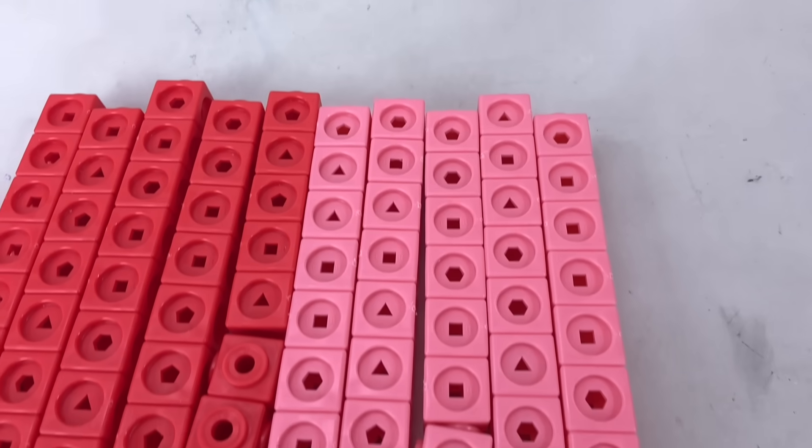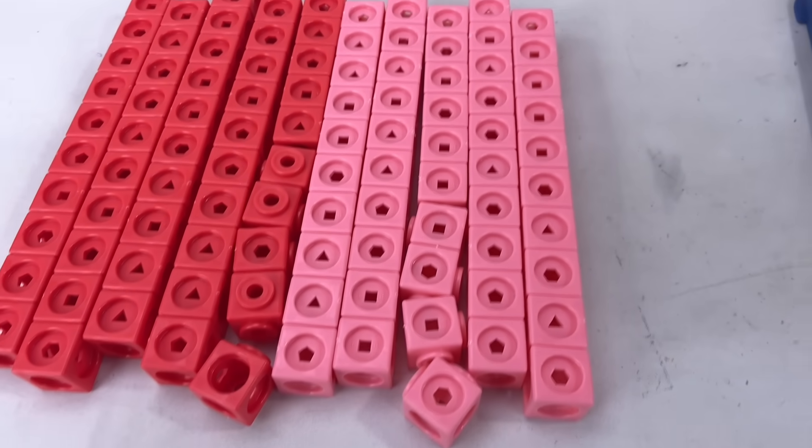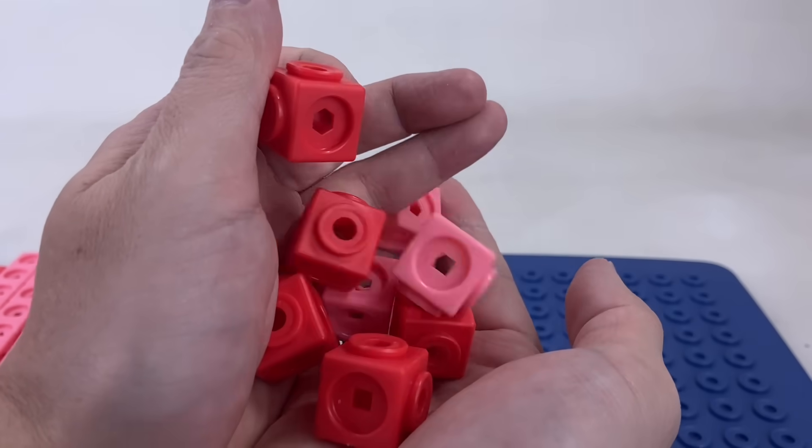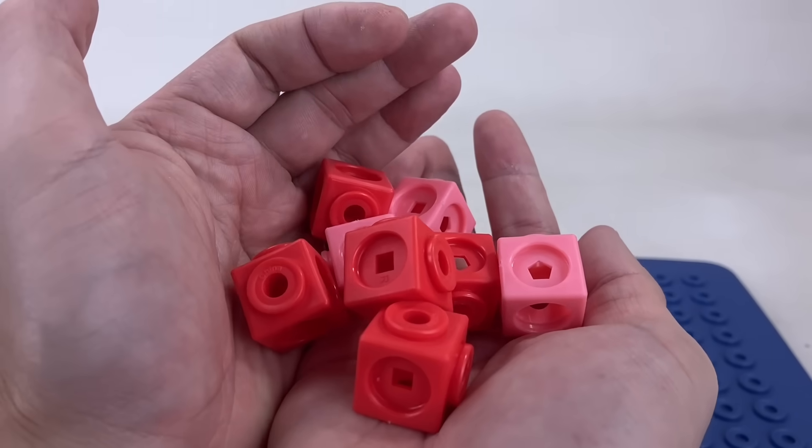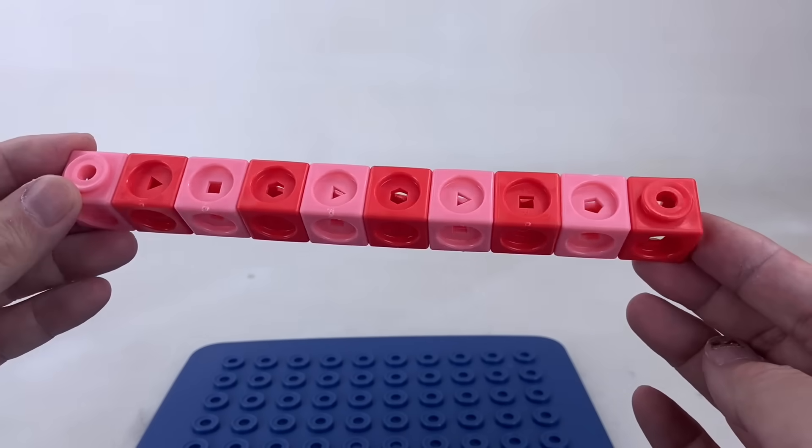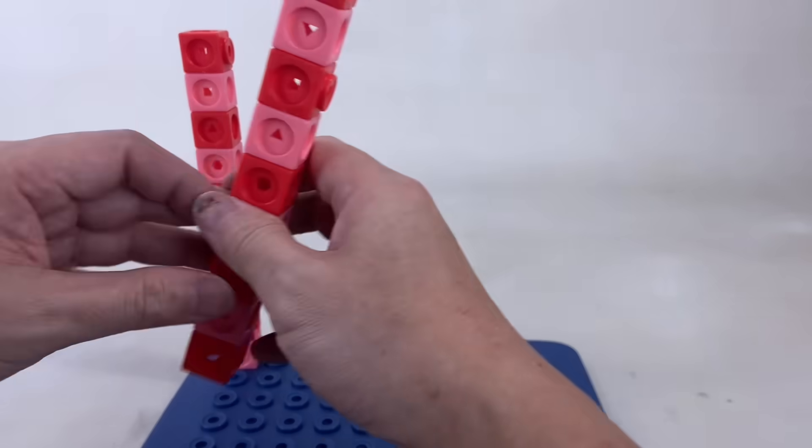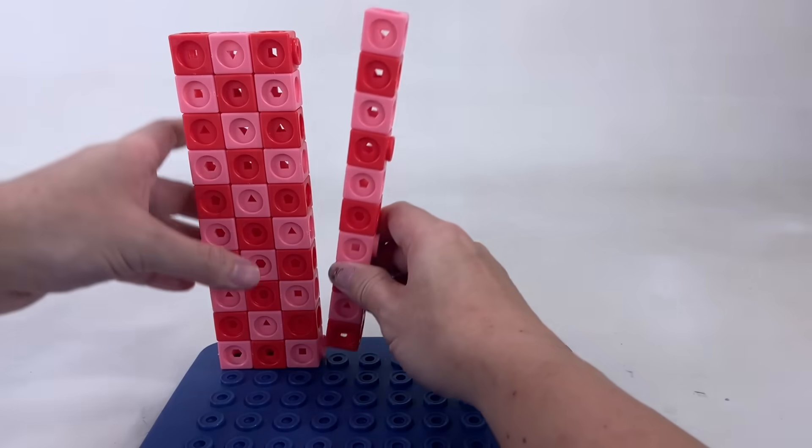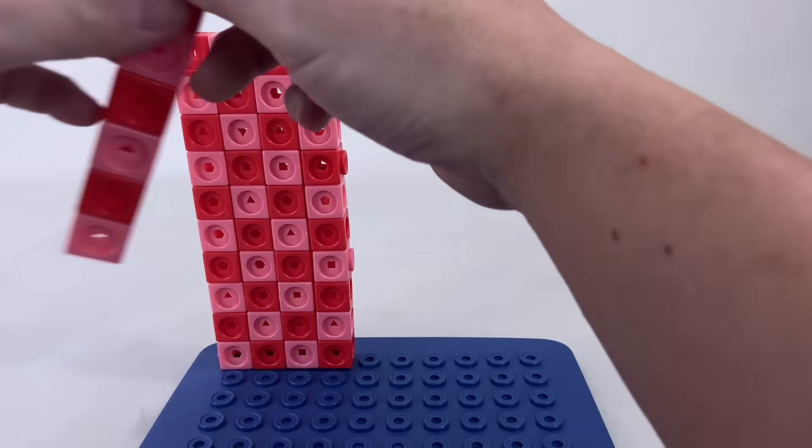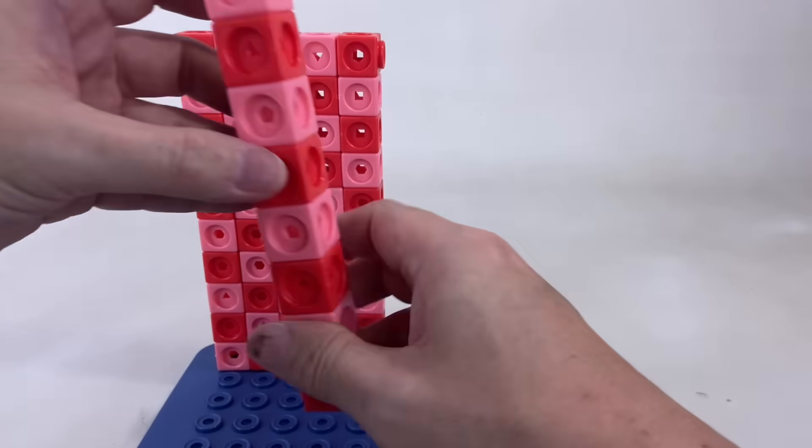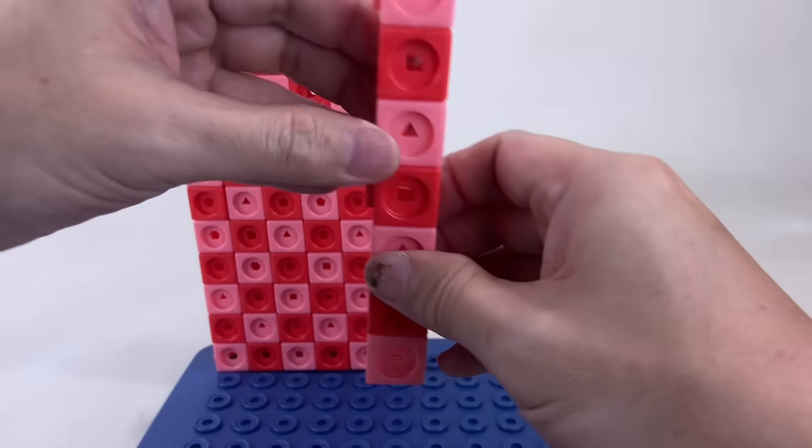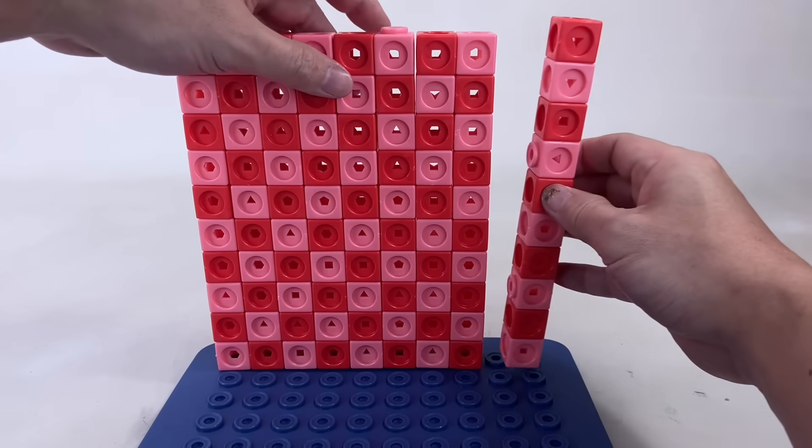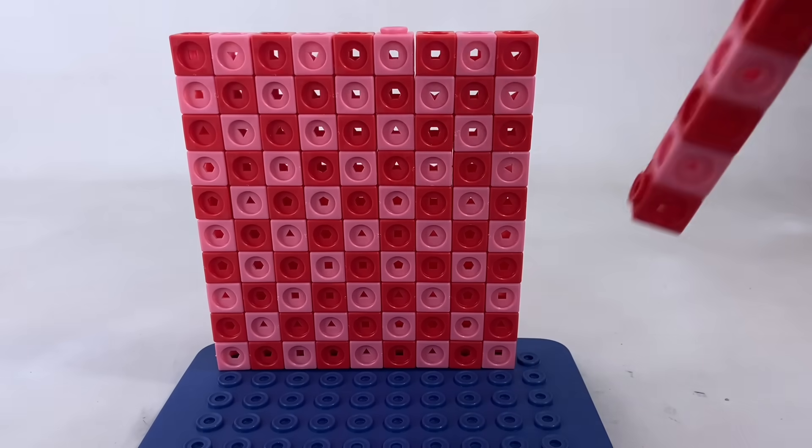And finally our last hero for today is HUGE and we need a lot of red and light red blocks. We'll also need 9 special connectors. Each column is made up of alternating red and light red blocks. We have 10, 20, 30, 40, 50, 60, 70, 80, 90, 100.